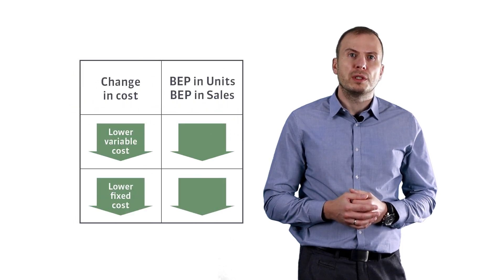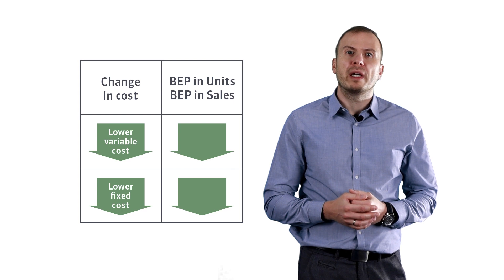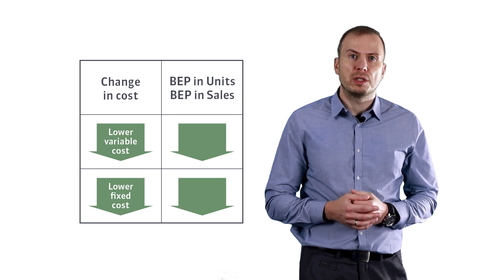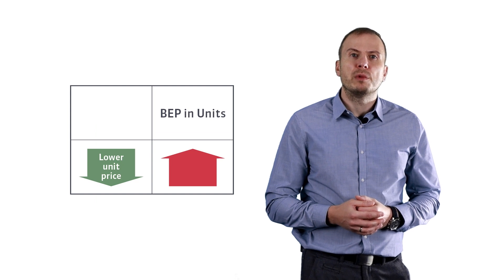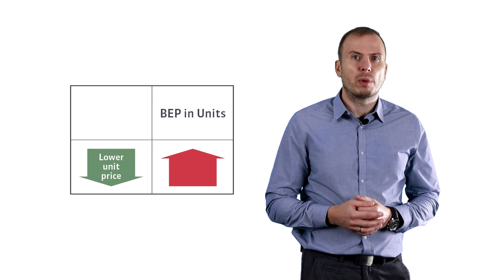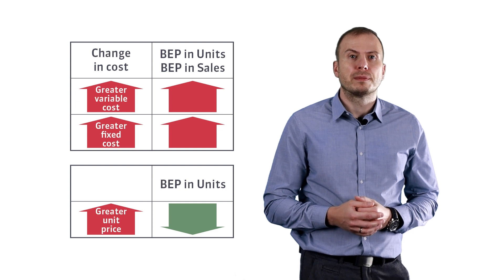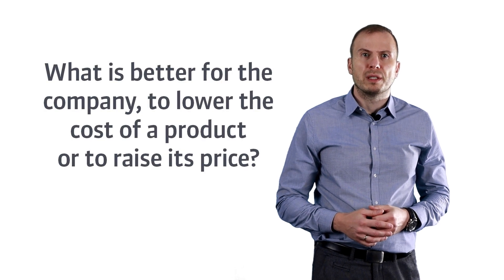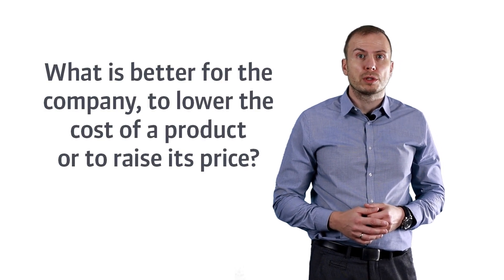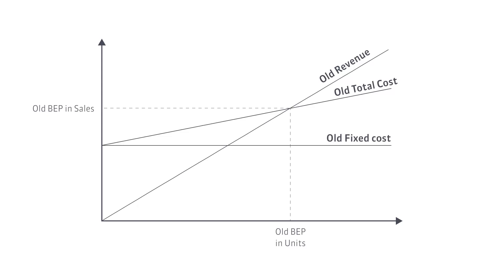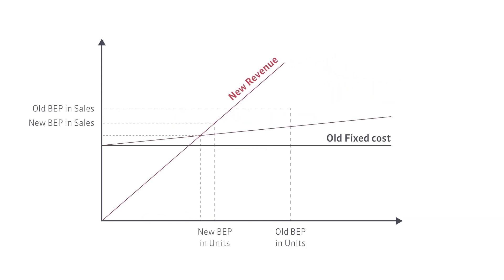To summarize: when we reduce the unit variable cost and fixed cost, it makes the breakeven point easier to achieve. However, if we lower the price of the product, we will reach the breakeven point later than before the change, and vice versa. So what is better for the company — to lower the cost of a product or to raise its price? This question is tricky, because it is best to do these two things together at the same time.